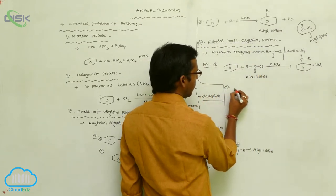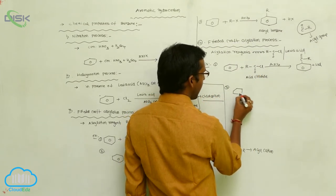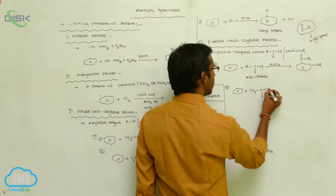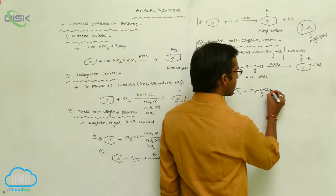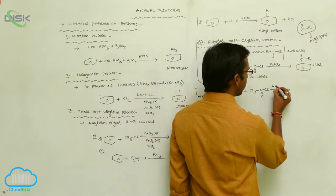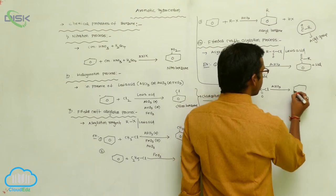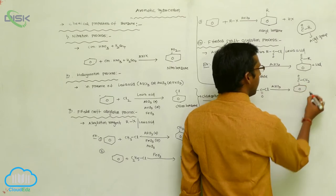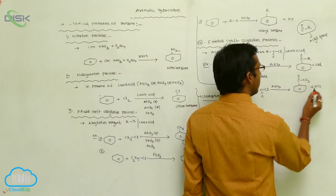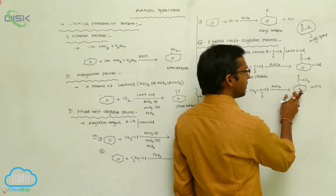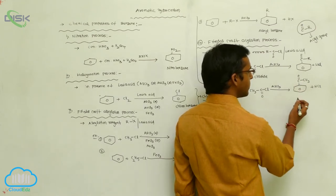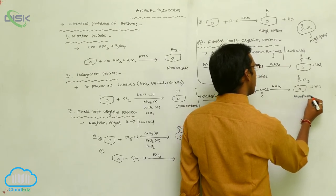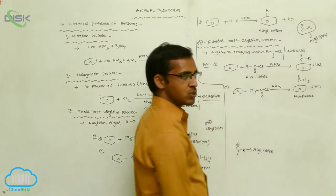Second example: benzene is reacted with CH3C(=O)Cl (acetyl chloride) in the presence of Lewis acid. The substituted group is C(=O)CH3, and HCl is eliminated. The product where CH3C(=O) is attached to benzene is called acetophenone.